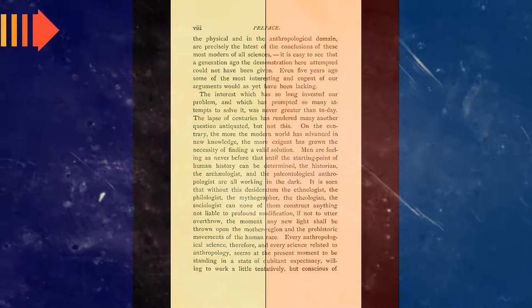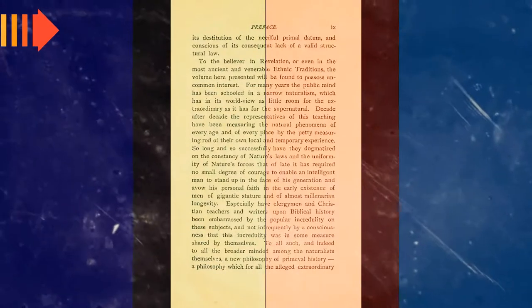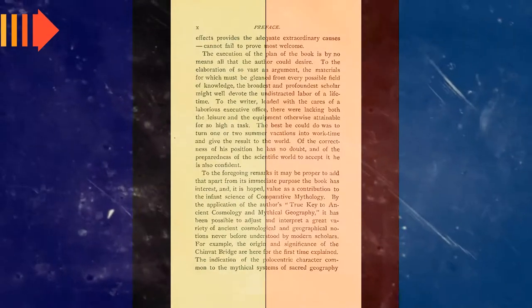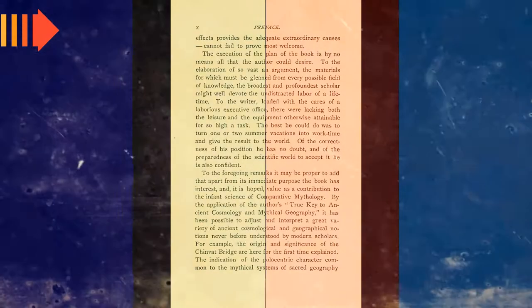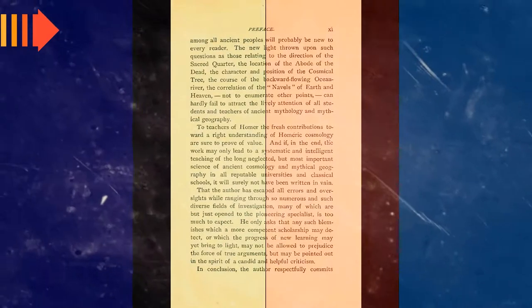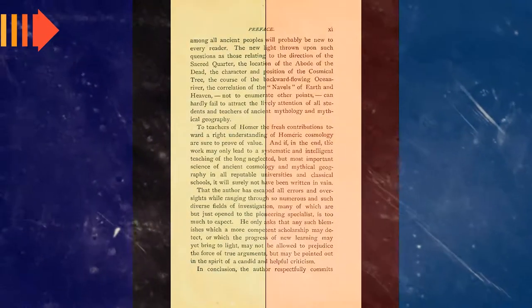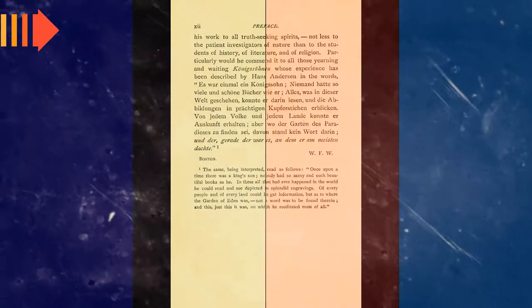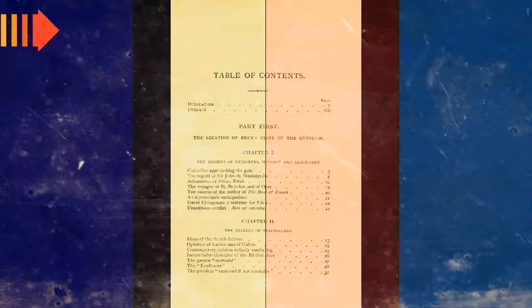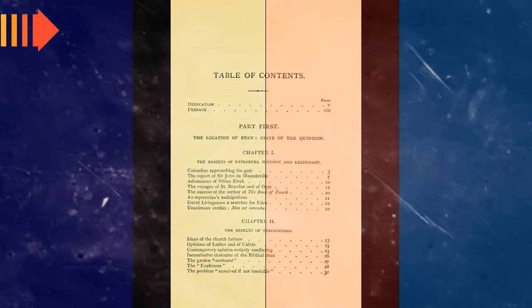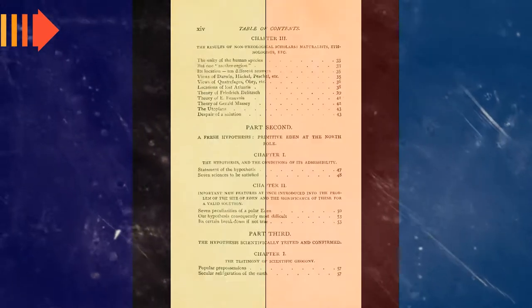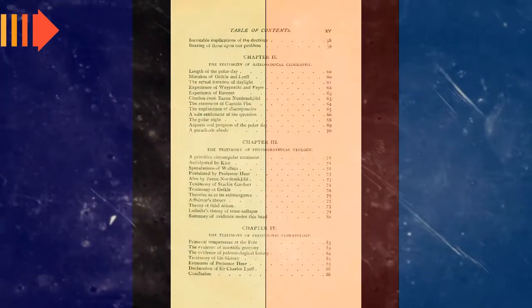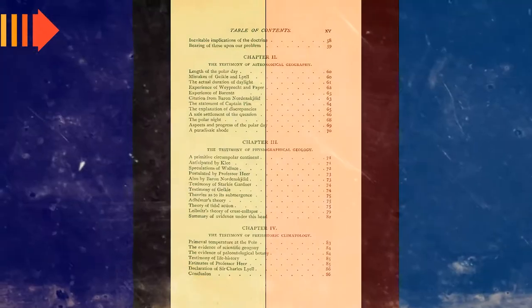He published The True Key of Ancient Cosmology, 1882, Paradise Found, The Cradle of the Human Race at the North Pole, 1885, The Quest of the Perfect Religion, 1886, In the Footsteps of Arminius, 1888, The Story of Gottlieb, 1890, Religions of the World and the World Religion, 1900, The Earliest Cosmologies, 1909, and The Universe as Pictured in Milton's Paradise Lost, 1915.